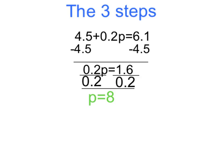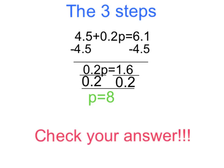Those are the two steps in how to solve a two-step equation. The first step was to get rid of the 4 and 5 tenths on both sides of the equal sign, so we ended up with 2 tenths p is equal to 1 and 6 tenths. Then we isolate the variable by dividing each side by 2 tenths, because whatever you do to one side you have to do to the other, and we got p is equal to 8. And you can't forget to check your answer, because that is the secret third step that is the most important.